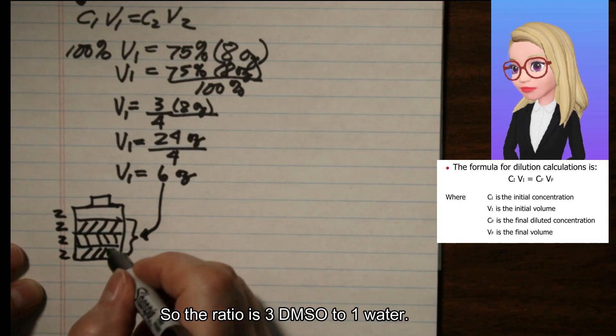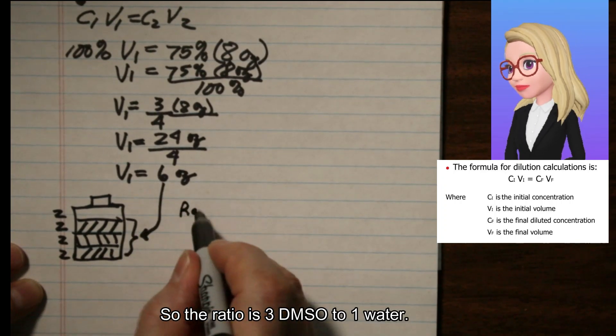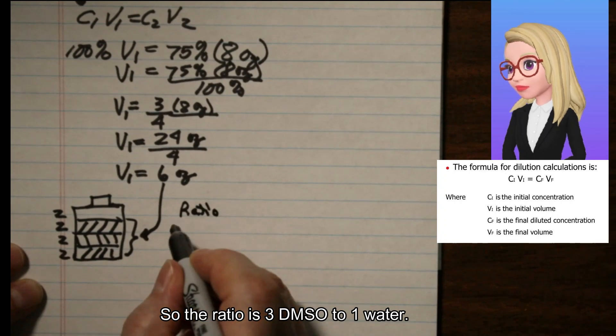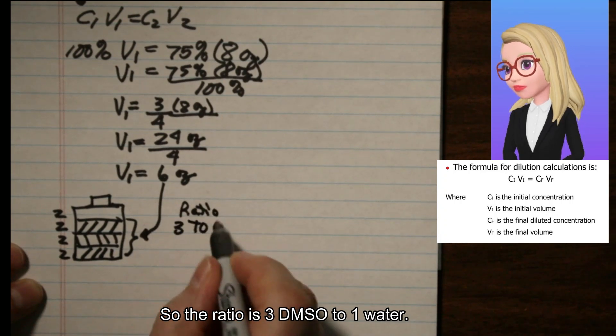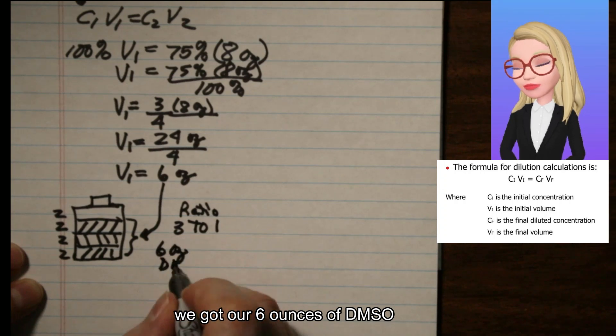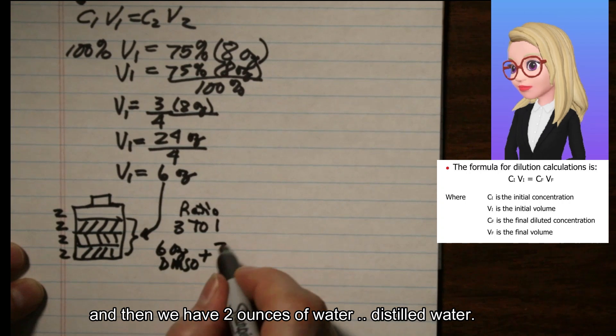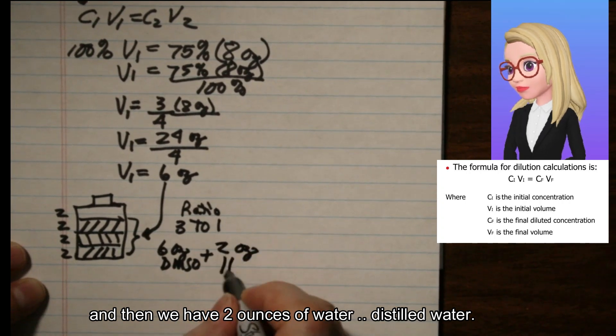So the ratio is 3 DMSO to 1 water, 3 to 1. So we got our 6 ounces of DMSO and then we have 2 ounces of water.